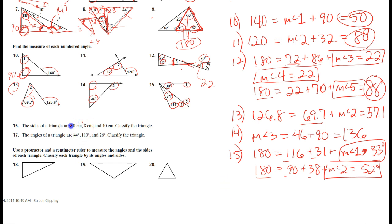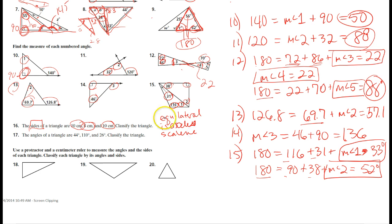Number sixteen. I have sides of ten centimeters, ten centimeters, and eight centimeters. When classifying triangles by sides, the options are equilateral (three sides equal), isosceles (two sides equal), and scalene (no sides equal). Since two sides are equal, this triangle is isosceles.